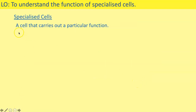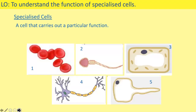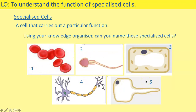A specialised cell is a cell that carries out a particular function — that's the definition of a specialised cell. On the screen there are five different images, all specialised cells. Use your knowledge organiser to name them one to five. Pause the video and have a go.